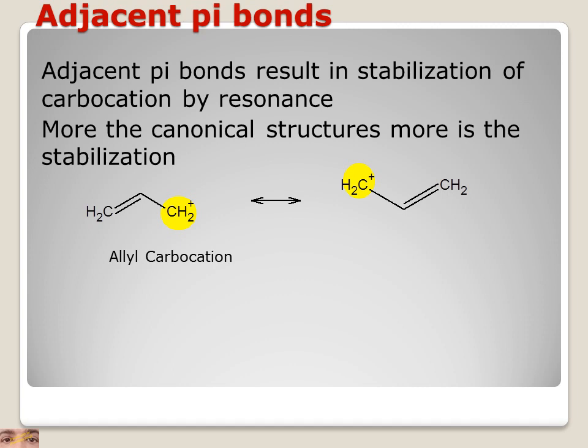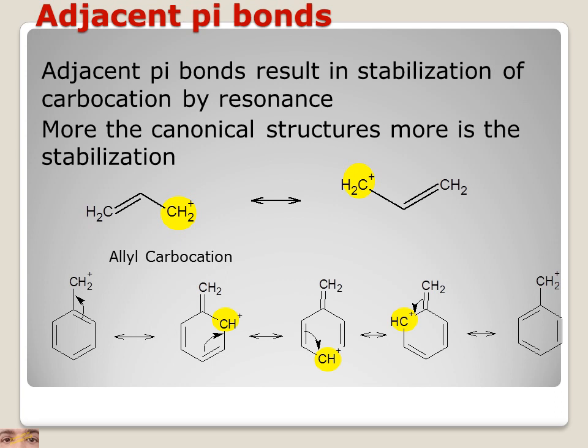In the case of the allyl carbocation, it has a positive charge on one end. When the electron moves from one position to the other, a carbocation is generated on the other position. This gives the canonical structure of the allyl carbocation. More canonical structures means more stabilization — this is a standard rule of resonance.